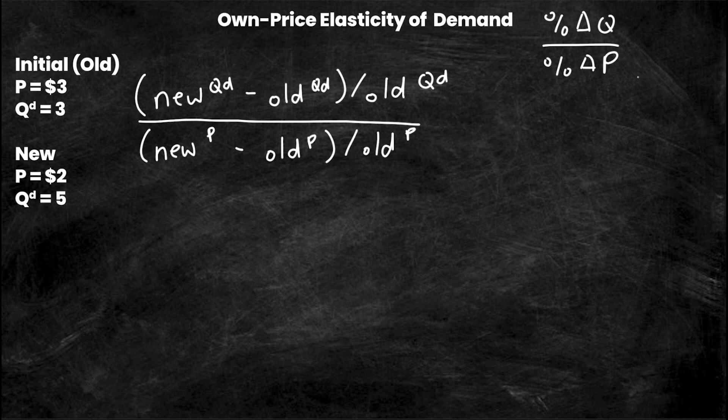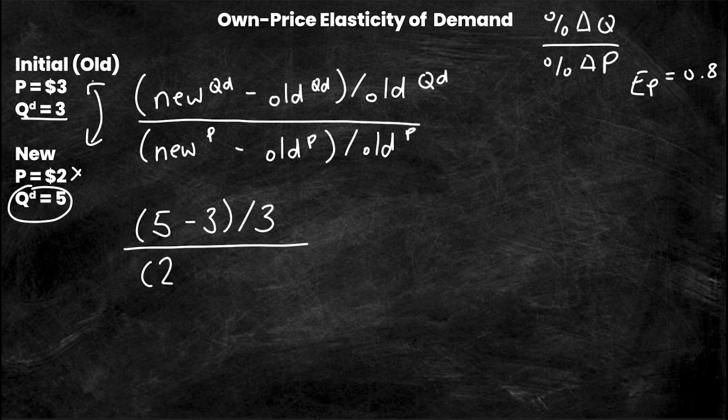Remember, our elasticity from the previous example was 0.8. Now we're going to find out that this elasticity when these two are switched is going to be different. So be very careful to know which one is the old P and Q and which one is the new P and Q. The new quantity demanded is 5, so I have 5 minus the old QD which is 3, over 3. And this is all over new P which is 2 minus old P which is 3, over 3.